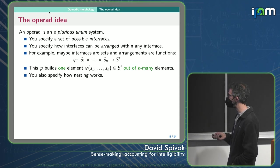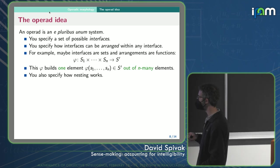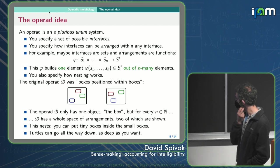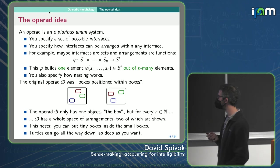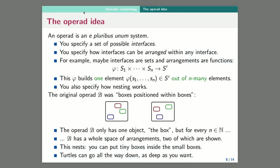So you also specify how nesting works. And this will be a lot clearer pretty soon. So the original operad was the operad of boxes positioned within boxes. And this mattered for algebraic topology issues. So here I have three boxes positioned within a box. So this would be an arrangement, and this would be another arrangement. The interfaces would just be boxes. There'd just be one interface called box.